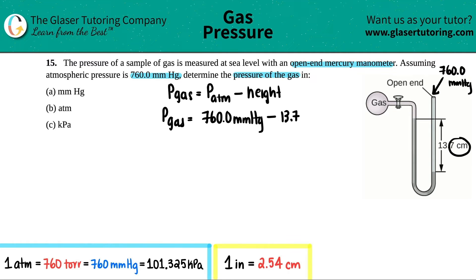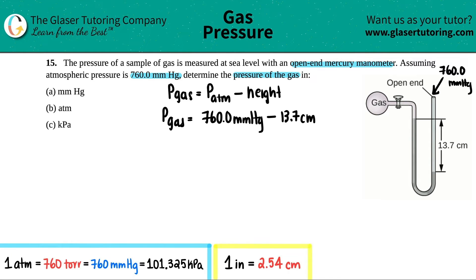The height is 13.7 centimeters — and since this is a mercury manometer, that's centimeters of Hg. Notice the units don't match: atmospheric pressure is in millimeters while the height is in centimeters, so we need to convert.